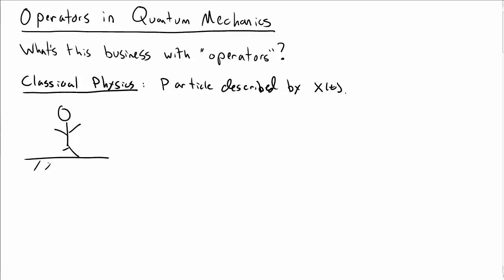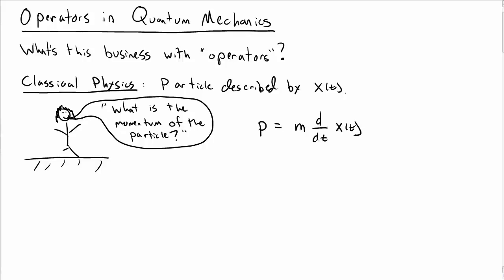In particular, if you were Newton, so here's Newton, a question you might ask is, what is the momentum of the particle at some time t? And the way you might answer this, if you were Newton, is you would calculate the momentum as m times the time derivative of the position x of t.